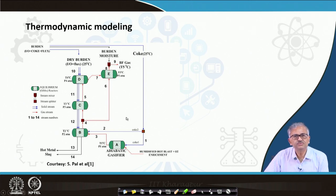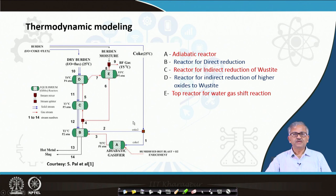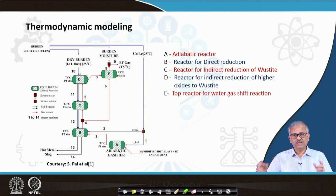Reactor A is basically an adiabatic reactor. The coke coming in is split by a splitter: part of the coke goes into the adiabatic reactor and part goes directly to reactor B for direct reduction. This coke is burned in reactor A, generating heat. You can calculate heat generation from the heat of reaction using FACSAGE thermodynamic database. The inputs are partially humidified blast with some oxygen enrichment — typically 21 volume percent oxygen enriched to 23 or 25 percent — along with some moisture added to the air blast.